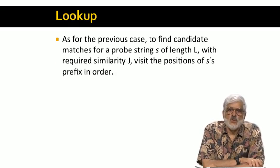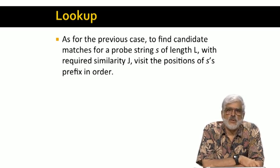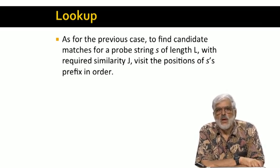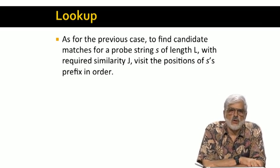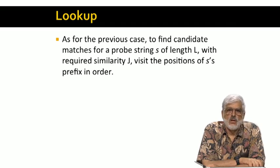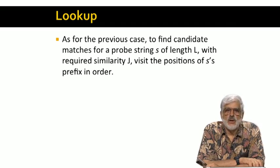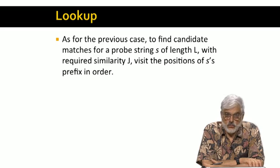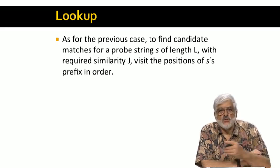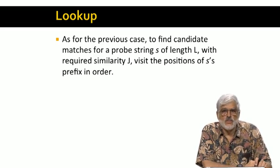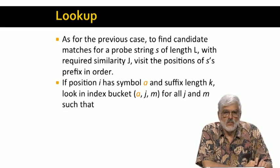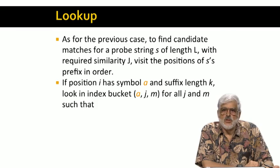The lookup algorithm is similar to what we've seen before, but there are more buckets. Each probably contains many fewer strings, and we have a stronger condition that lets us rule out a larger fraction of the bucket. So suppose we're given probe string S, and we want to find strings T that might be within Jaccard distance J of S. We'll look at certain buckets for each position of the prefix of S.